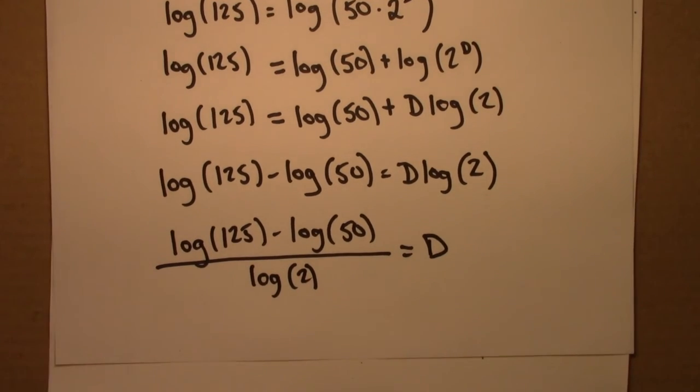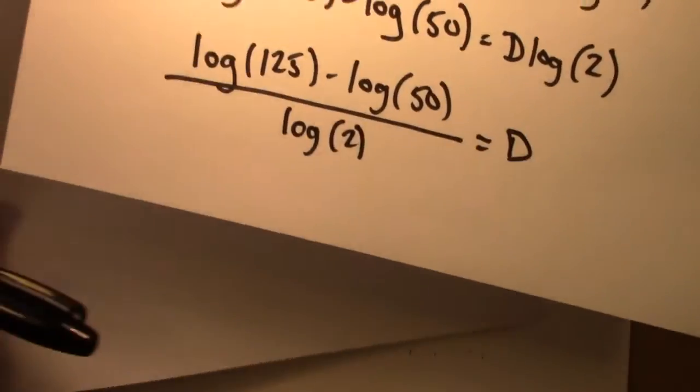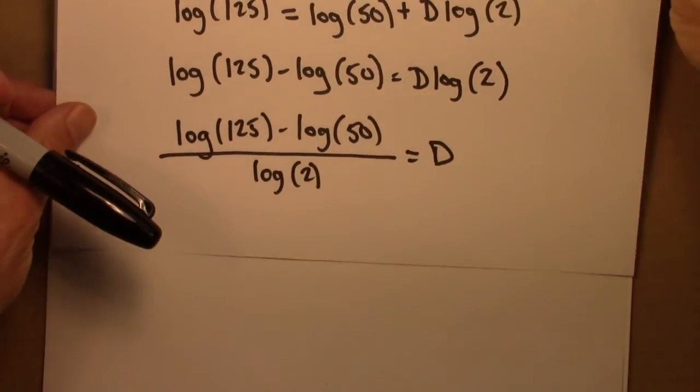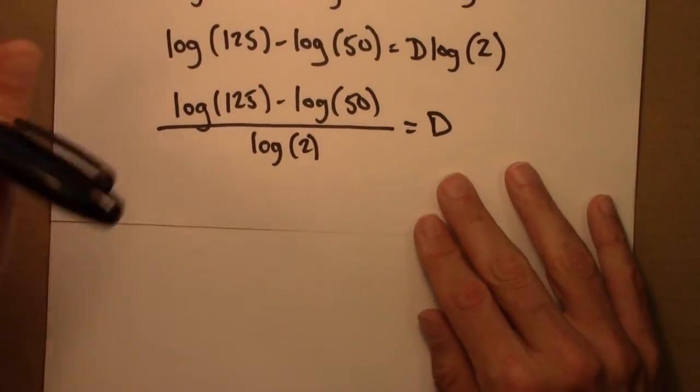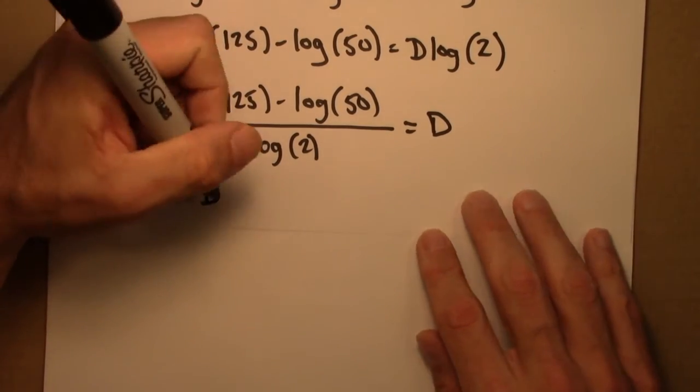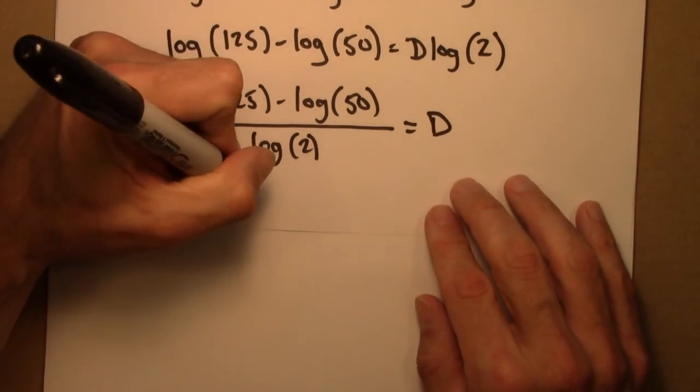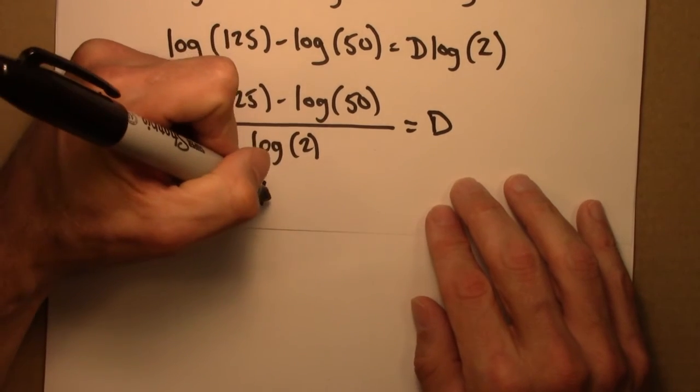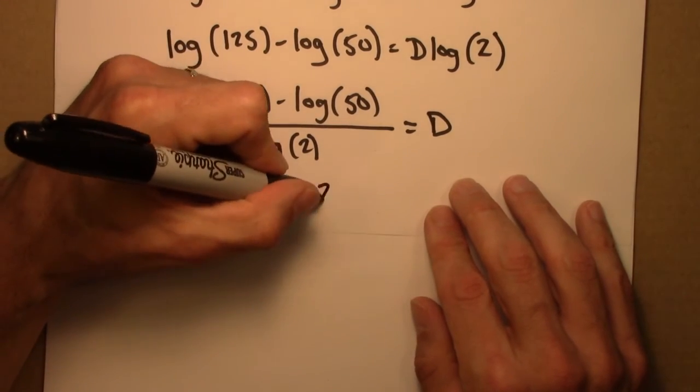So that's our answer. And we can plug this into a calculator to get an approximate numerical answer. And if you do, you should find that d is approximately equal to 1.322.